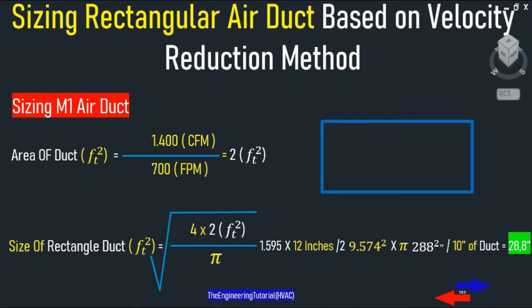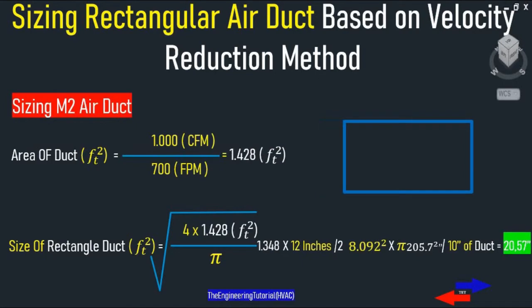The same method should be done for all main ducts by dividing the total area of the duct over the height of 10 inches, or a different height as you wish. For M2: 1000 CFM divided by a velocity of 700 FPM, square root of 4 times 1.428 divided by pi, times 12 inches divided by 2 squared times pi — that gives us 205.7 square inches.